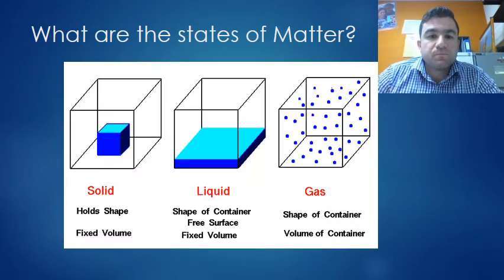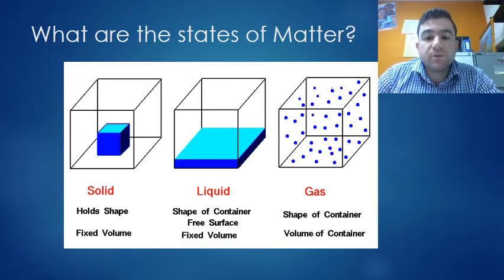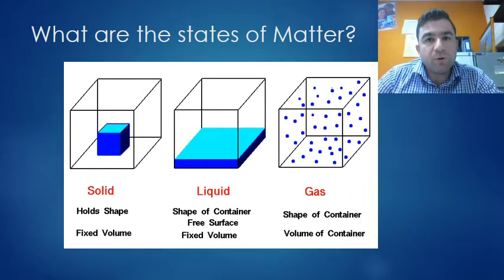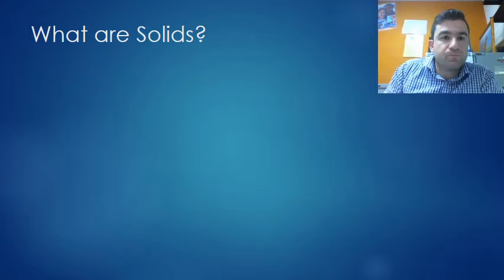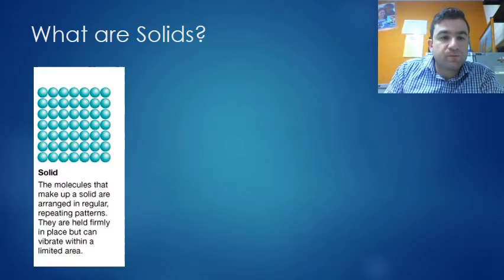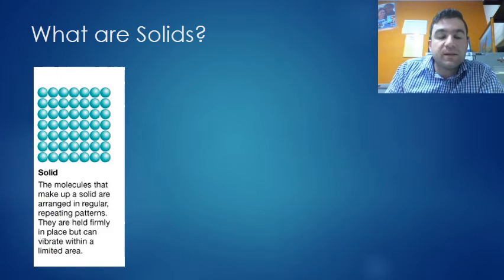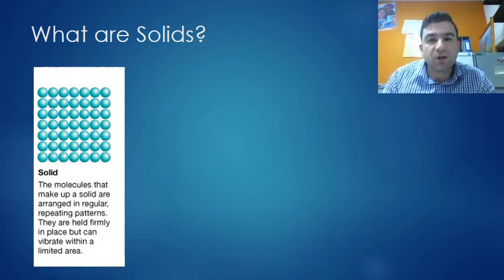What are the states of matter? They are solid, liquid, and gas. Think about ice - ice is water. When we heat it up, it boils and we get condensation. So that's an easy way to think about the three states of matter. In solids, the molecules are arranged in regular, repeating patterns. They're held firmly in place but can vibrate within a limited area. They're all close together, so ice is hard.